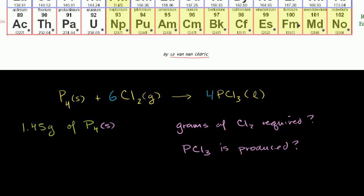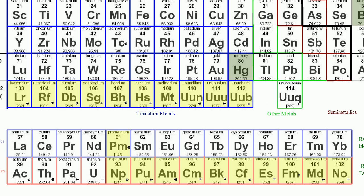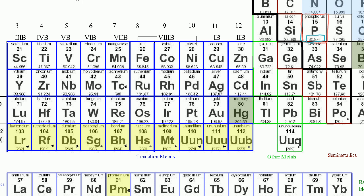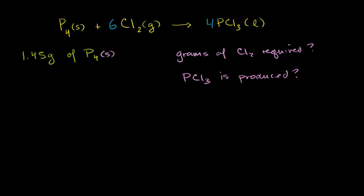So let's figure out how many moles of phosphorus we have on our hands. Let's look at our periodic table — I have to give proper attribution to the maker, Levon Han Sedgric, from Wikimedia Creative Commons with an attribution license. Phosphorus has an atomic weight of 30.974 — let's just round that up to 31. So phosphorus has an atomic weight of 31, which tells us that a mole of phosphorus will weigh 31 grams. A mole is 6.02 times 10²³ — a huge number of atoms — and if you have that many atoms of phosphorus it's going to weigh 31 grams.